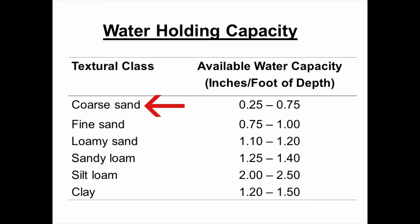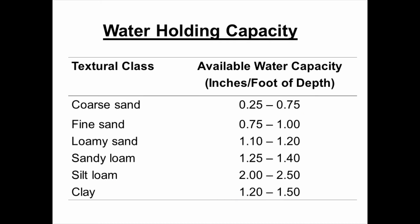Coarse sand has a very low available water holding capacity, and clay also has a very low water holding capacity. We find the greatest water holding capacity in the silt loam category, which is one reason why the Midwest is rich in silt and why we've been so successful in our agricultural endeavors.